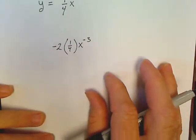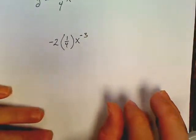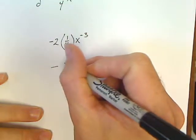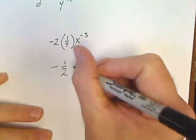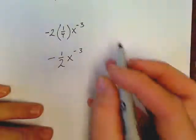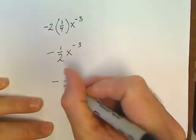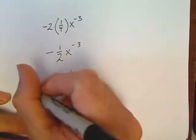Now we make this look like something we're used to. This would be negative 2 over 4, which reduces to negative 1/2 x to the negative 3. I don't want to leave it like that. I want to finish by writing negative 1 over 2x to the third.